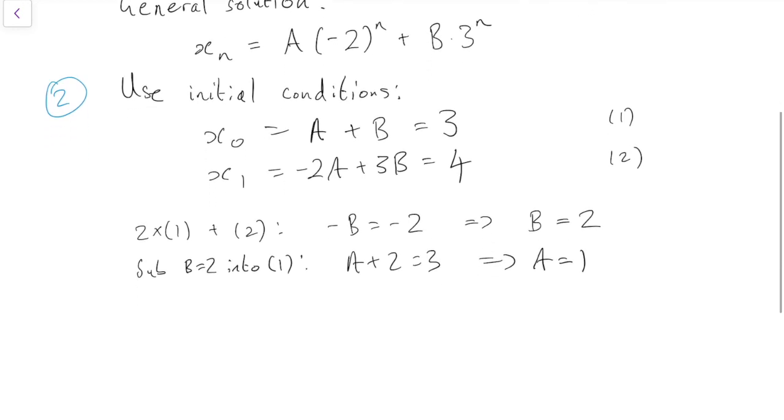And finally, putting it all together, the solution is x_n equals A, which is 1, so that's just (-2)^n, plus B, which is 2 times 3^n. That's (-2)^n plus 2 times 3^n.